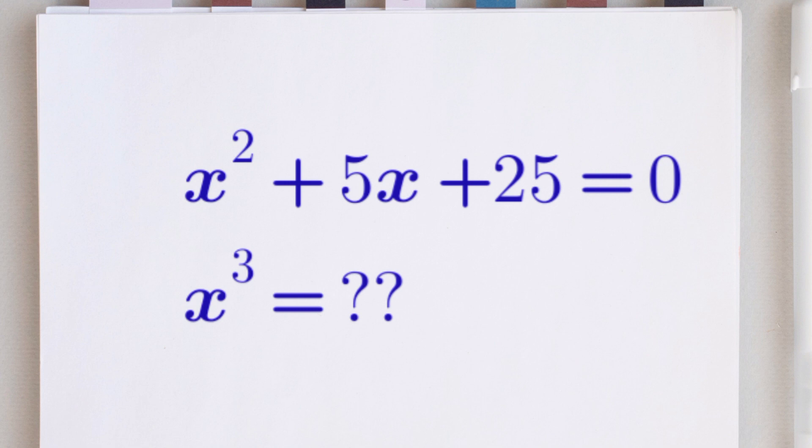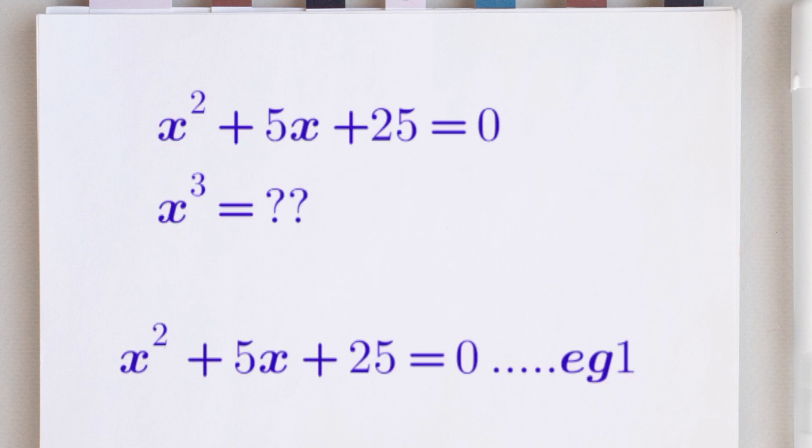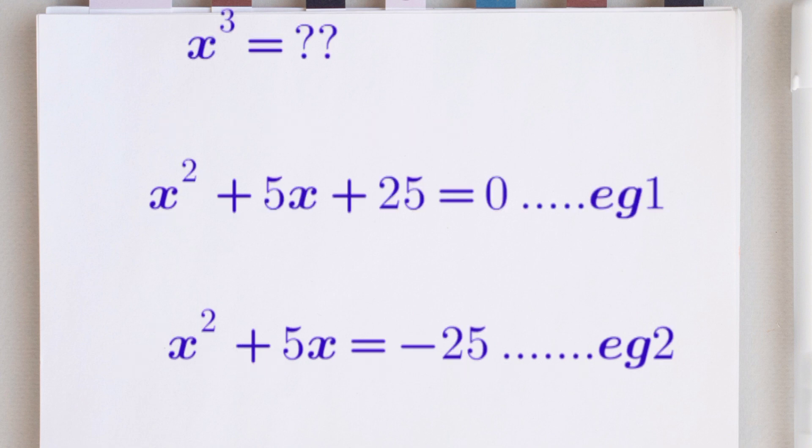First of all, we are going to write our question and name that equation 1. So we have x raised to the power of 2 plus 5x plus 25 is equals to 0, and that is our equation 1. We are going to form an equation 2. We can write equation 1 as x raised to the power of 2 plus 5x is equals to minus 25, and we are going to name that equation 2.